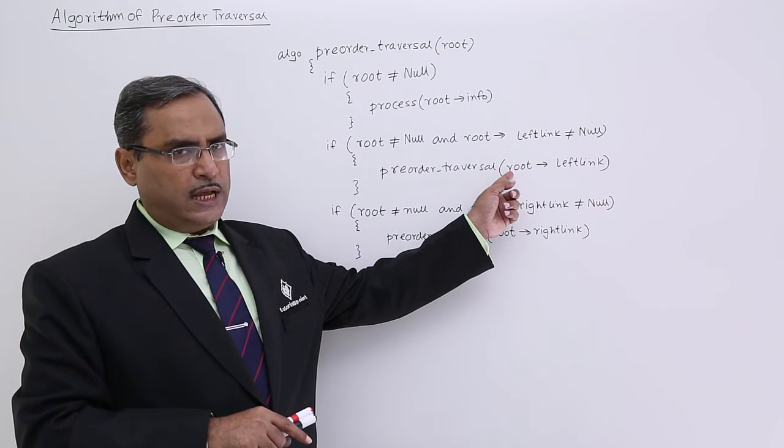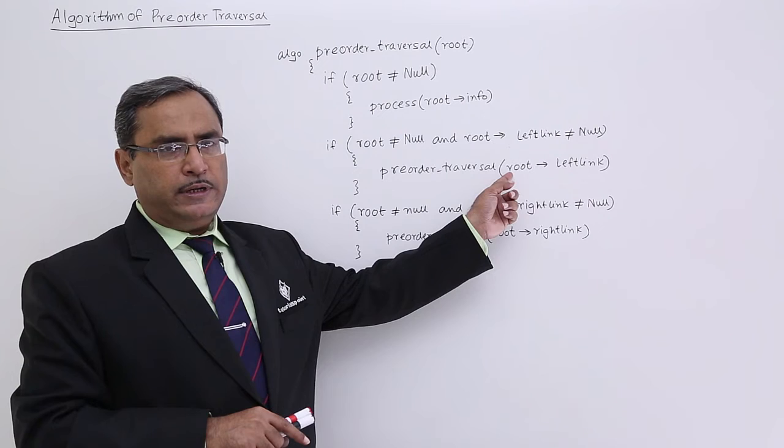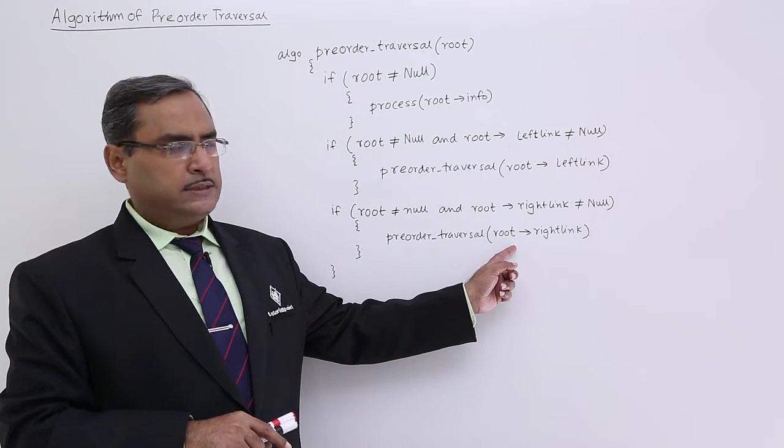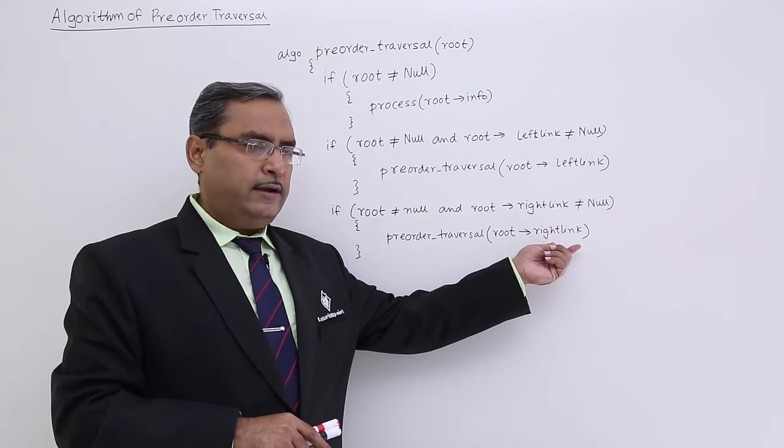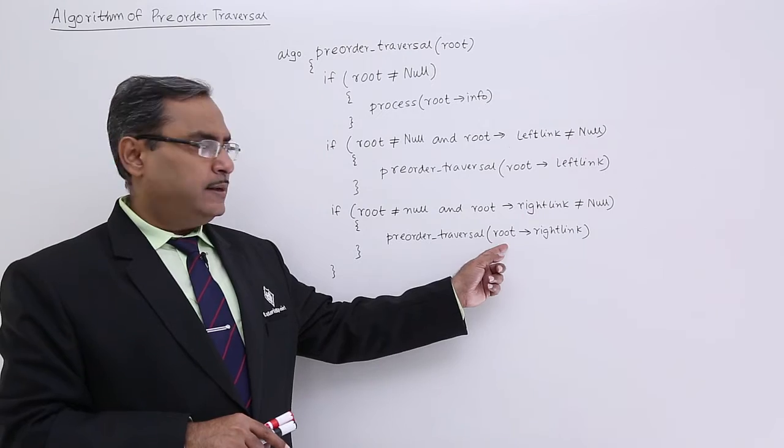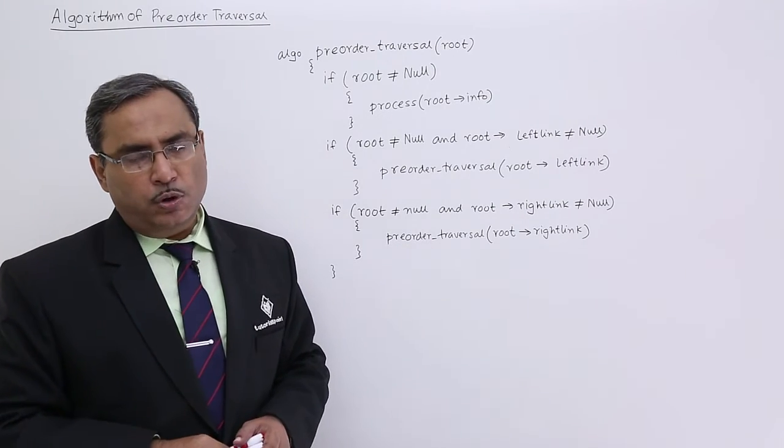Left subtree root node has been passed as input parameter earlier, and then right subtree root node will be passed, which will be nothing but the root node's right link. And then on that particular right subtree, the pre-order traversal will be done.